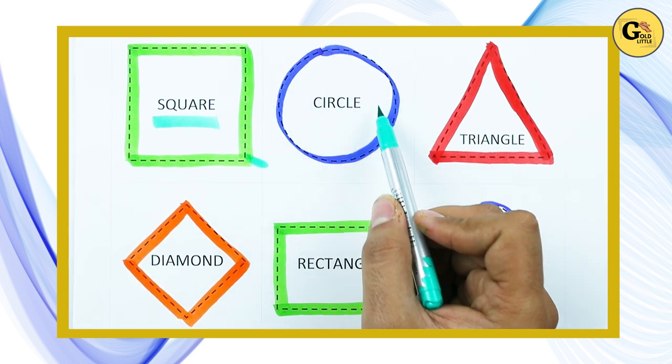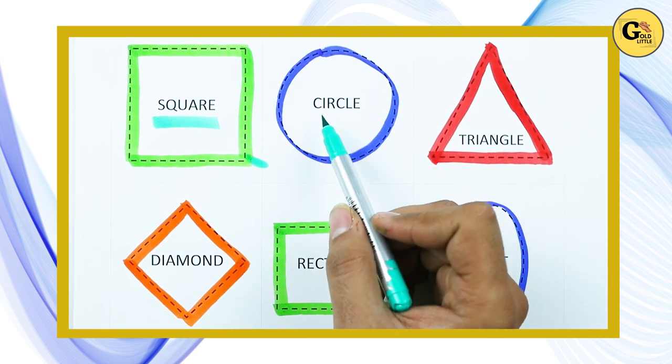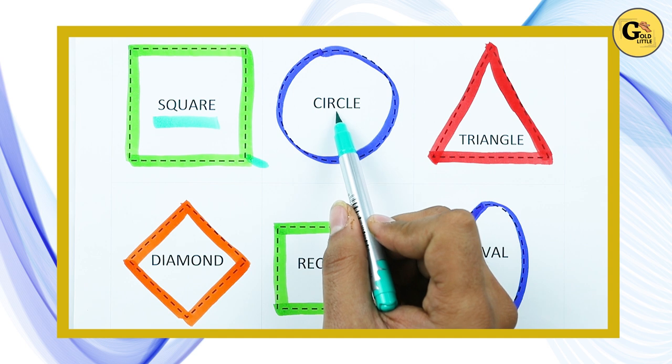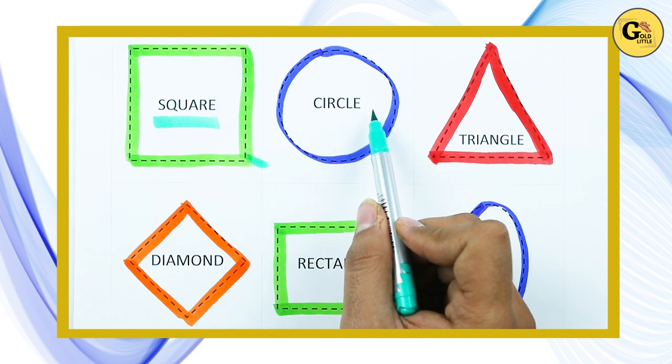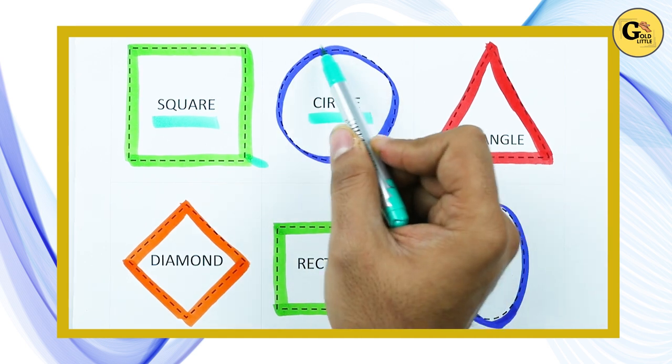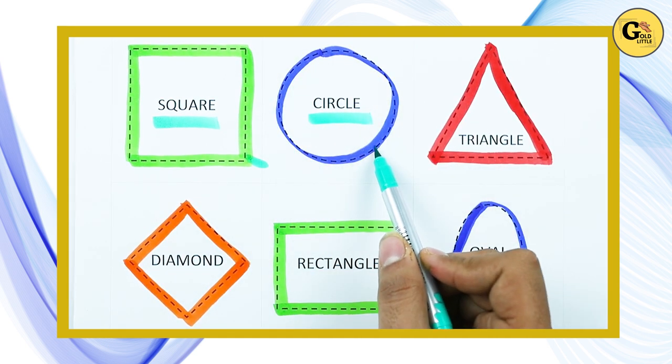Which shape is this? Circle. C-I-R-C-L-E. It's a circle with blue color.